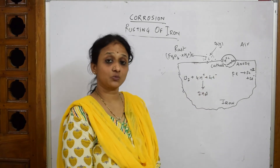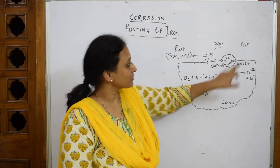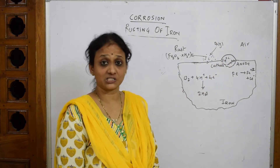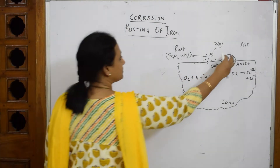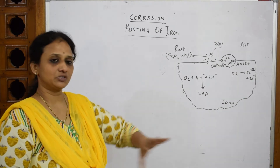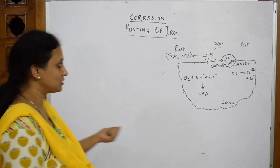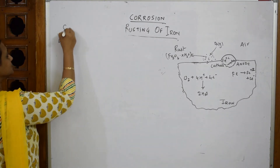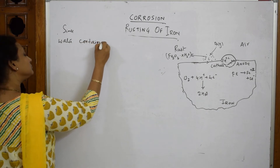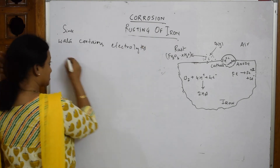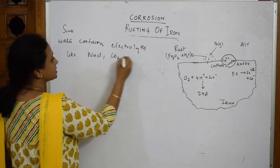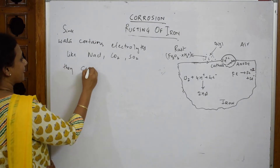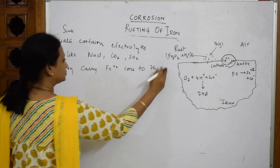After the cell reaction, the Fe²⁺ ions are carried through water present on the metal surface. Water contains electrolytes due to pollutants like SO₂, CO₂, and dissolved salts, and these carry the Fe²⁺ ions to the surface of the metal.